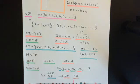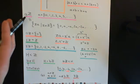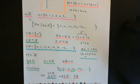Welcome back to this next video in which we are discussing subgroups. We're currently in the process of discussing the subgroups of the group of integers under addition. What we've discussed so far is that all of the subgroups of the group of integers under addition are of this form aℤ, where a is some non-negative integer.